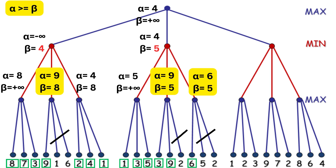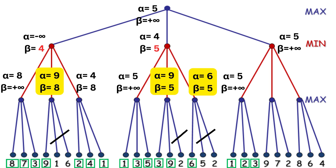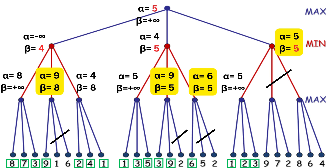Based on the current values at min level, the value of alpha at max level will be updated — instead of 4 it now becomes 5. It will be propagated down to the children. After exploring all terminal nodes of the first child there will be no change. We can update the value of beta at min level. As 5 is less than positive infinity, the beta value at min level will be updated. Now alpha equals 5 and beta equals 5, and the condition of pruning is alpha greater than or equal to beta. Pruning will occur and the next two complete branches will be pruned.